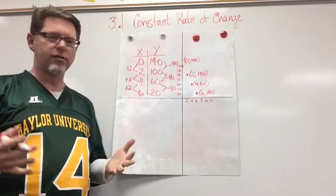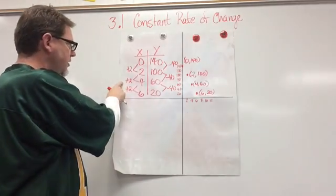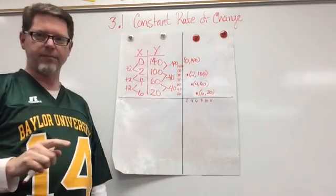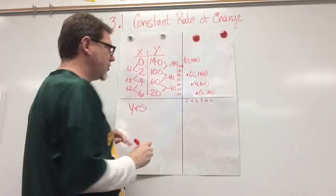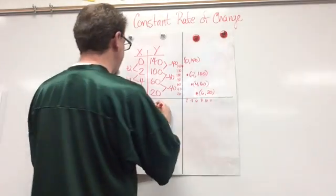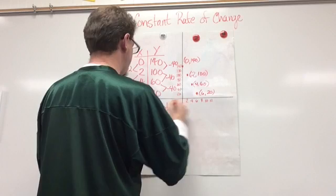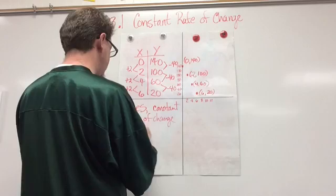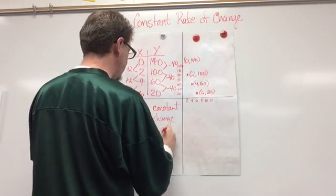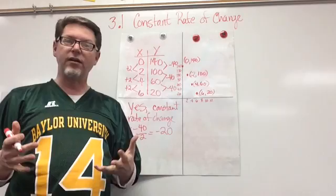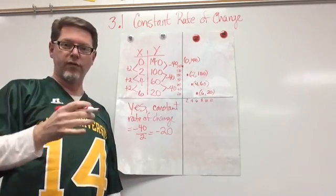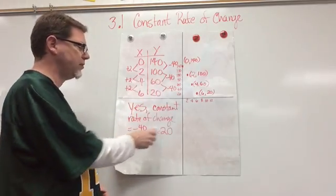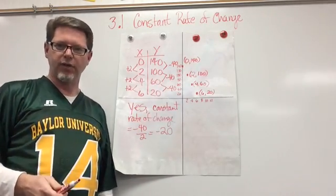Is it a constant rate of change? Absolutely. My change in x are all the same. And my change in y's are all the same. So yes, the graph is a constant rate of change. And the constant rate of change equals negative 40 over 2, which equals negative 20. Because remember to find our constant rate of change, it's the change in y over the change in x. y over x, negative 40 over 2, divide those two, and you get negative 20 for the constant rate of change.